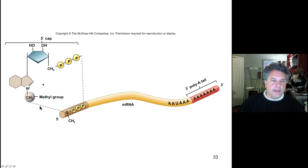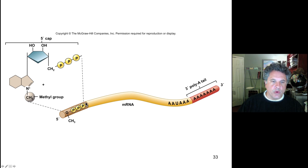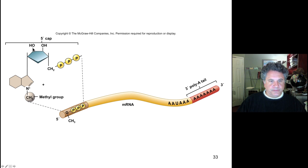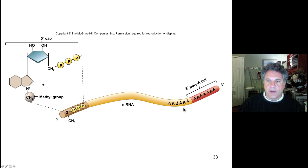Schematically, a 7-methylguanosine is added to the 5' end of the mRNA forming a 5' cap. Interestingly, this is added in reverse orientation — there is a triphosphate joined to the phosphate of the first nucleotide of the messenger RNA, in a reverse direction compared to the normal 5' to 3' polarity of nucleotides in the messenger RNA. The 3 phosphates are joined directly to the 5' phosphate of the first nucleotide of the pre-mRNA.